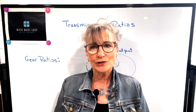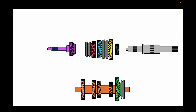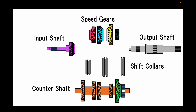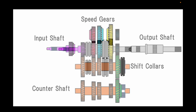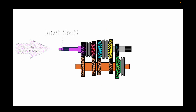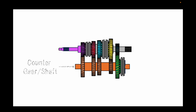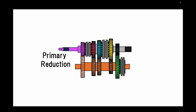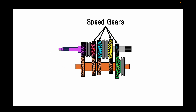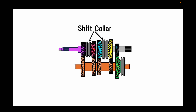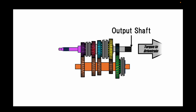Let's first take a look at the transmission and some of its components. The main components of the transmission are the input shaft, counter shaft gears, speed gears, shift collars, and output shaft. The input shaft receives torque from the engine, which is transferred to the counter gear — this is called the primary reduction. From here the torque is transferred to the speed gears on the output shaft, represented by the red, blue, and yellow gears. These gears free float around the output shaft and are only locked in when the shift collar is engaged to the appropriate gear, forcing the output shaft to rotate at the same speed as the locked-in speed gear.